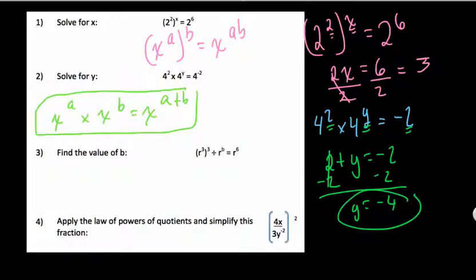In the next one, we're finding the value of a different variable, b. So we have r to the third cubed over r to the b, and we know when we do that, we get r to the sixth. So how might we do this, and what could the value of b be?